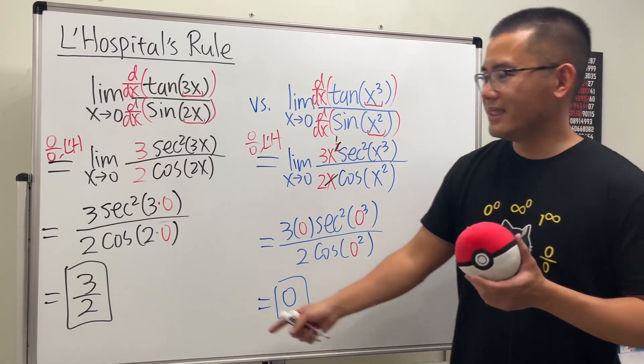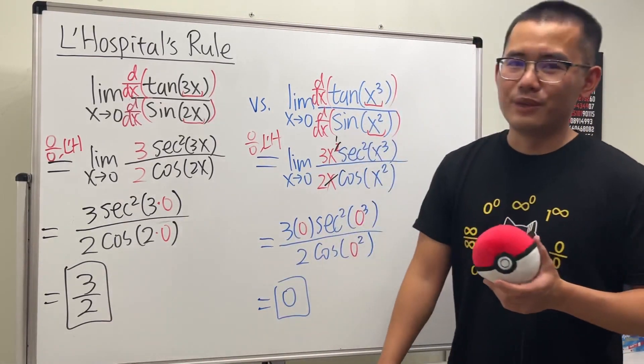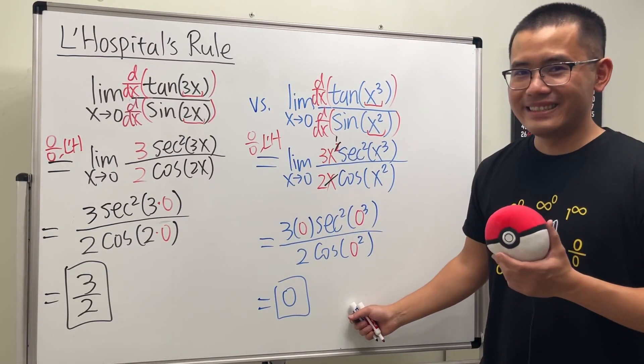So the answer for this one is equal to zero. But the one that we had earlier is three over two. Right, that's it.